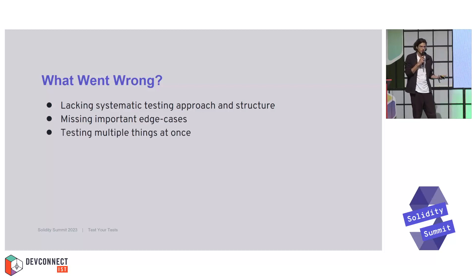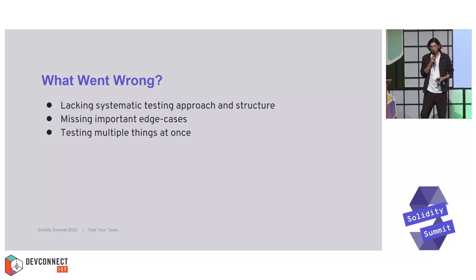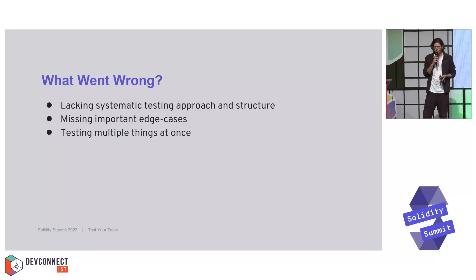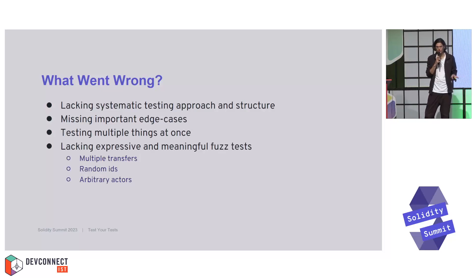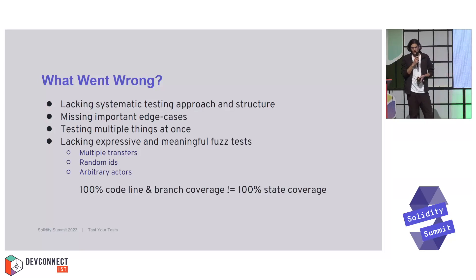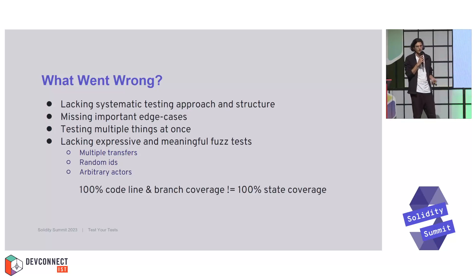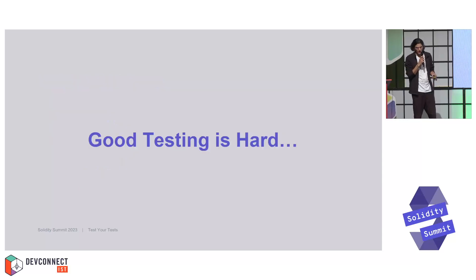What would have helped me most would have been expressive and meaningful fuzz testing for multiple transfers of random IDs and actors. One thing I really learned here was that 100% code line and branch coverage does not mean you've covered 100% of the possible states. Good and effective testing is quite hard. I've condensed some examples of how testing can look good but in the end be bad.